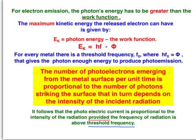In the last video we talked about work function, which is the minimum energy needed to dislodge an electron from a metal. And we talked about this formula here as well. It says for every metal there is a threshold frequency or minimum frequency f0. If we put f0 into that formula, then we get work function which is the minimum energy required. That gives the photon enough energy to produce photoemission or giving up electrons.